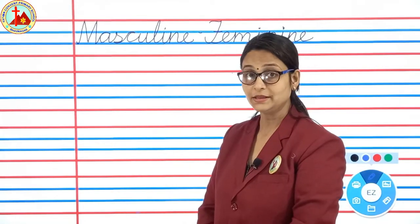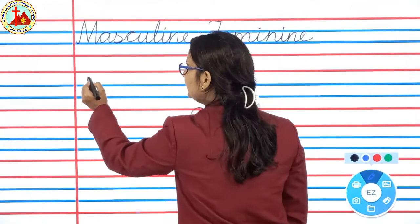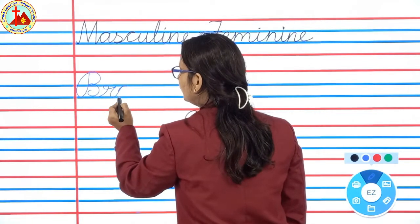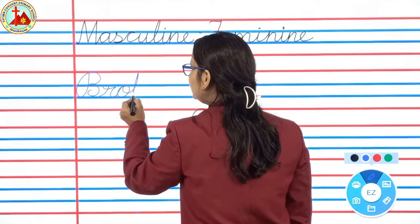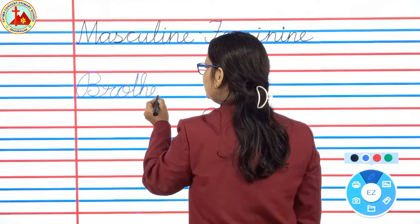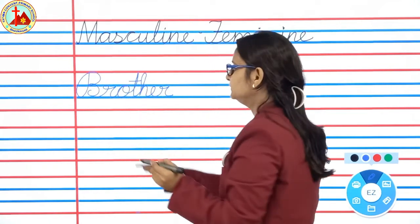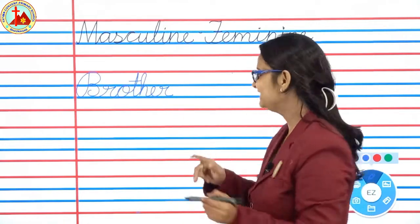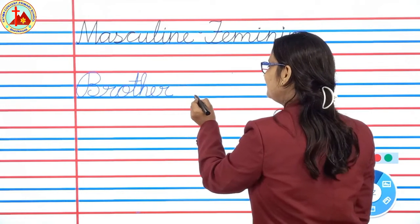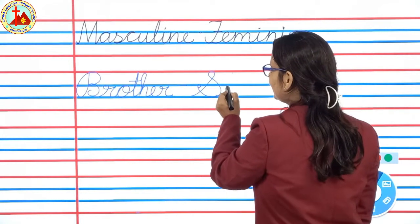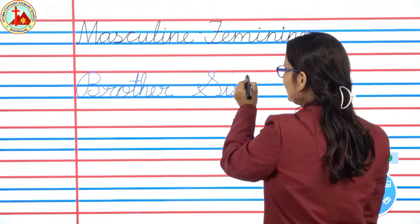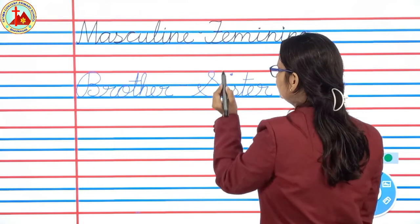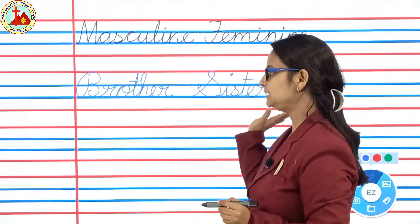Next word is brother. B-R-O-T-H-E-R. Brother. And feminine word? Sister — yes, very clever. Sister spelling: S-I-S-T-E-R. Sister.